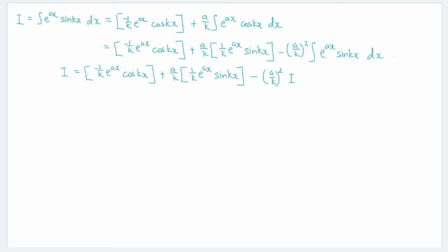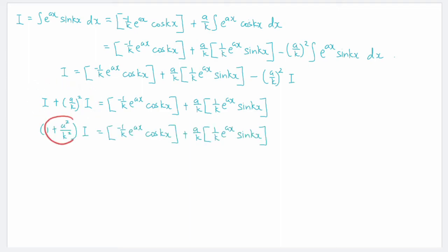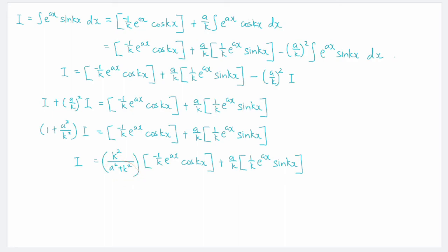Moving the term with I to the left side, we get I plus a squared over k squared times I, which should give us back the first two terms. Factoring out I, we get 1 plus a squared over k squared multiplied by I equals the right-hand-side expression. Since our objective is to find I, we move this factor to the right side, giving us k squared over (a squared plus k squared) multiplied by the entire right-hand-side function.